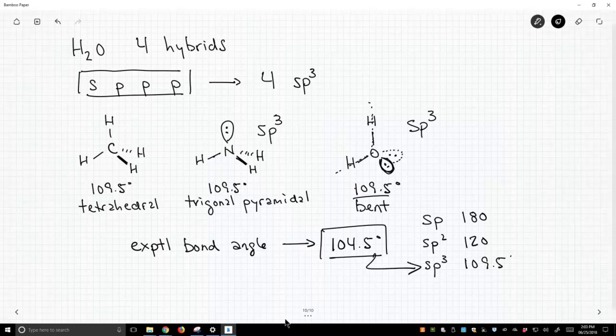So in general, the lone pairs want to reside in a hybrid orbital. So you include that those lone pairs in the count for your hybrid orbitals.